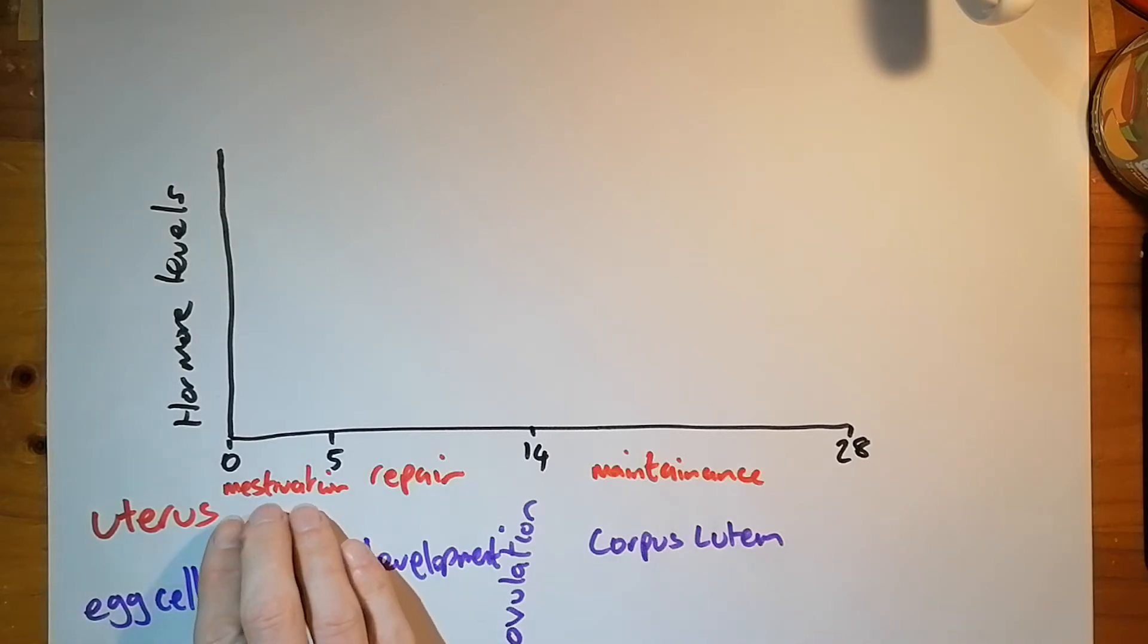So we've got the uterus actually leaving the body of the female in menstruation. Then you've got repair of the uterus lining and then maintenance. And then you've got the egg development and then being released from the ovary into the ovary duct. And then after that, the bit which is left over has some hormonal function, which is the corpus luteum. And this is what happens to those four hormones that we talked about.